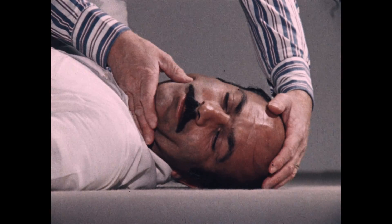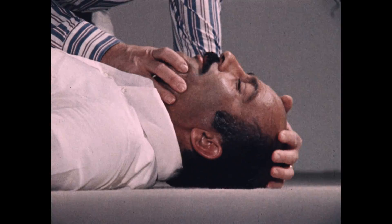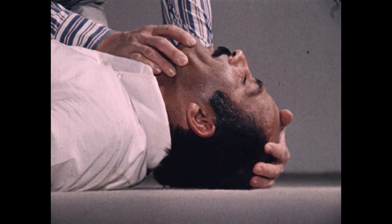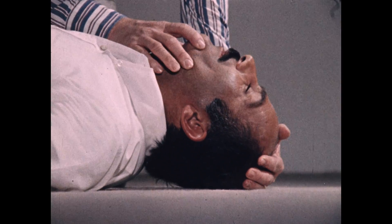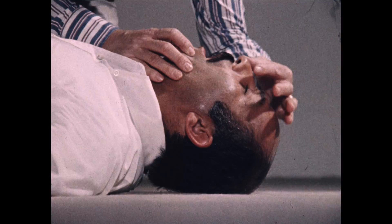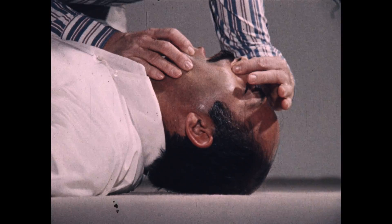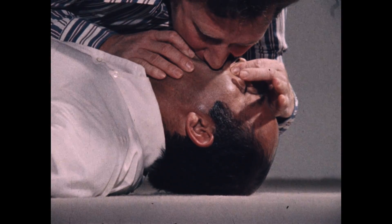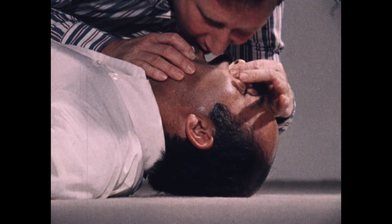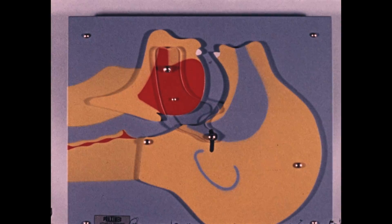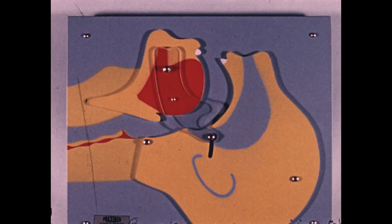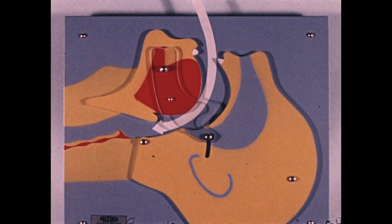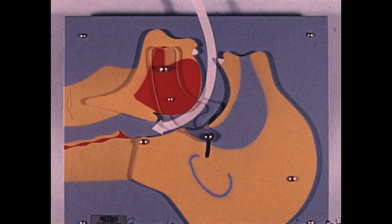The patient is placed on his back and the operator tilts his head back, opens his mouth, pinches his nose, and breathes air into his mouth by blowing into it. Tilting the head back is essential to prevent the tongue from blocking the respiratory passages.